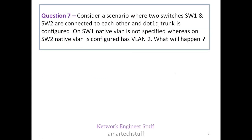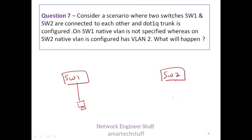Question number 7 is a scenario-based question. Consider a scenario where two switches, Switch 1 and Switch 2, are connected to each other. A dot1Q trunk is configured on Switch 1 with no native VLAN specified, whereas on Switch 2 the native VLAN is configured as VLAN 2. What will happen? Let me draw Switch 1 and Switch 2 with users on each.